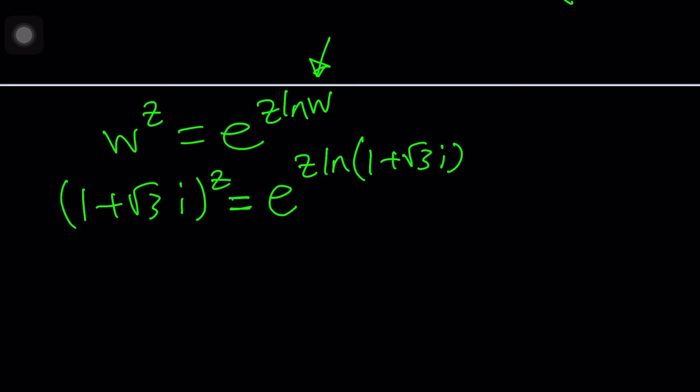But in this case, we have 1 plus root 3i to the power z. So w is replaced by the base. That gives us e to the power z times ln 1 plus root 3i. Oh, the ln came up again, but in a more technical or rigorous way, maybe. And then, of course, right-hand side is going to be 1 minus root 3i. But guess what? We can also write that in polar form so we can work with polar forms because polar forms will make this easier.